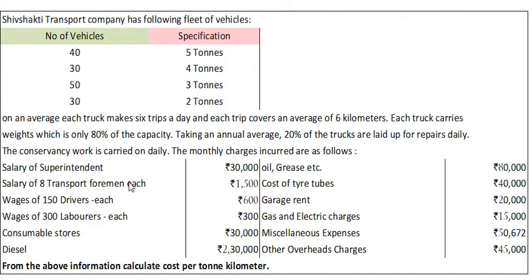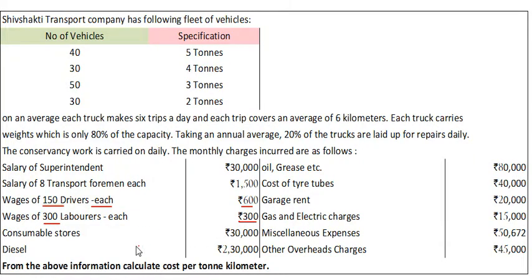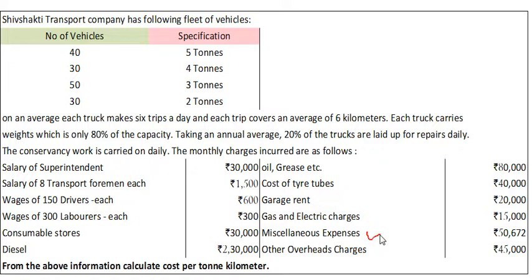The monthly charges are: Superintendent salary per month Rs. 30,000. Salary of 8 transport foremen, each Rs. 1,500, so per month it will be 1,500 multiplied by 8 = Rs. 12,000. Drivers' wages: 150 drivers multiplied by 600. Then 300 laborers multiplied by 300. Consumable stores Rs. 30,000. Diesel Rs. 2,30,000. Oil and grease Rs. 80,000. Cost of tyre tubes Rs. 40,000. Garage rent Rs. 20,000. Gas and electric charges Rs. 15,000. Miscellaneous expenses Rs. 50,672. And other overhead charges Rs. 45,000.